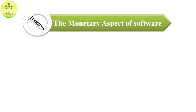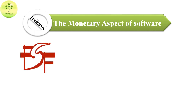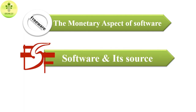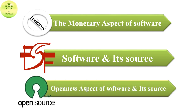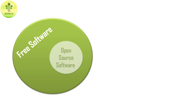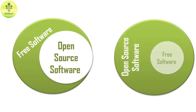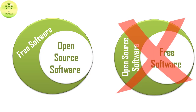While freeware is differentiated by the monetary aspect of software, free software is differentiated by the freedom associated with the software and its source code, and open source is differentiated by the openness aspect of the software and its source code. Every free software is open source, but not all open source software is free software. There are many open source software licenses, and some of them are a bit restrictive, making that open source software not free software.